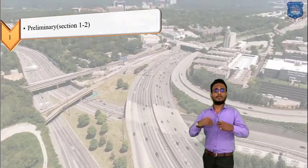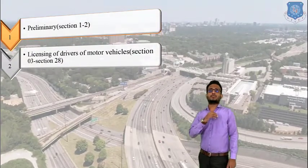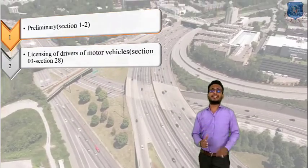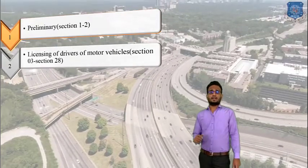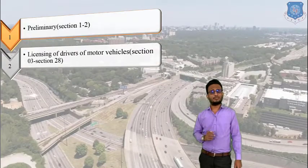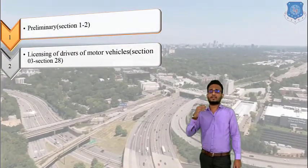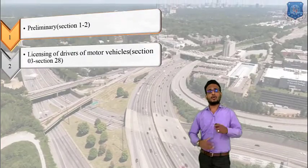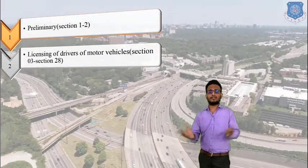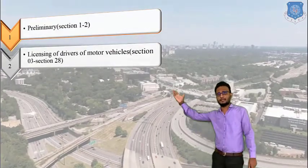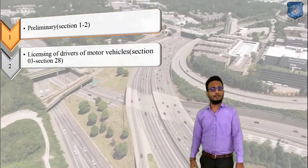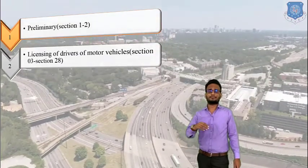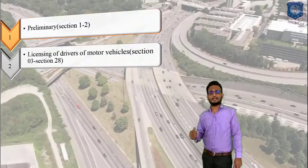In chapter number 2, we are going to learn about licensing of drivers of motor vehicles, and this chapter contains section 3 to section 28. It covers age of drivers, basic criteria for driving, learning license, commercial license, transportation license, and the basic criteria for transportation license.